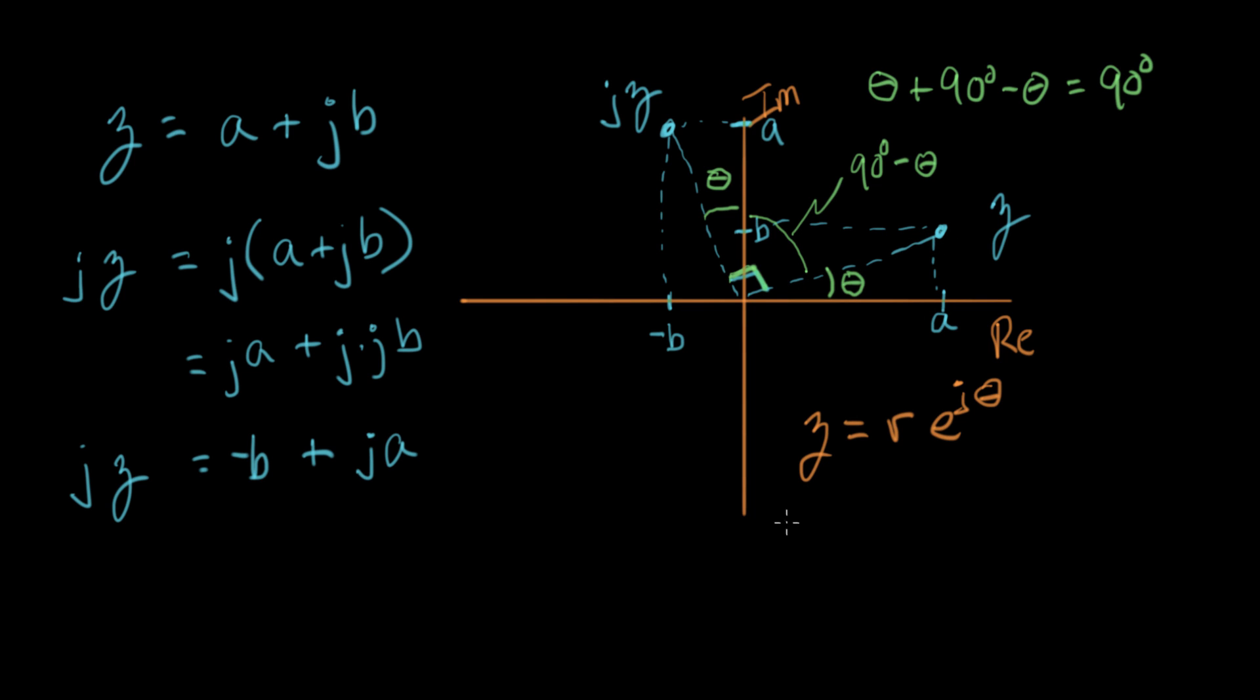So what is, in this notation, what is jz? And that equals j times r e to the j theta. So now I'm going to do a little trick, where I'm going to represent j in exponential notation. So if I color in dark here, this is j.